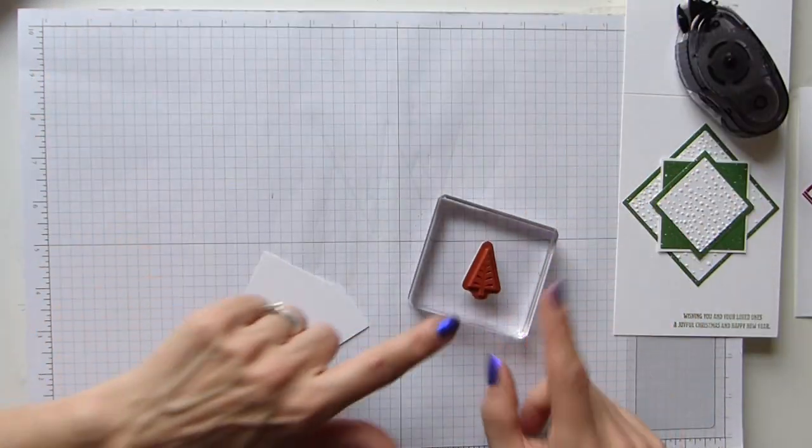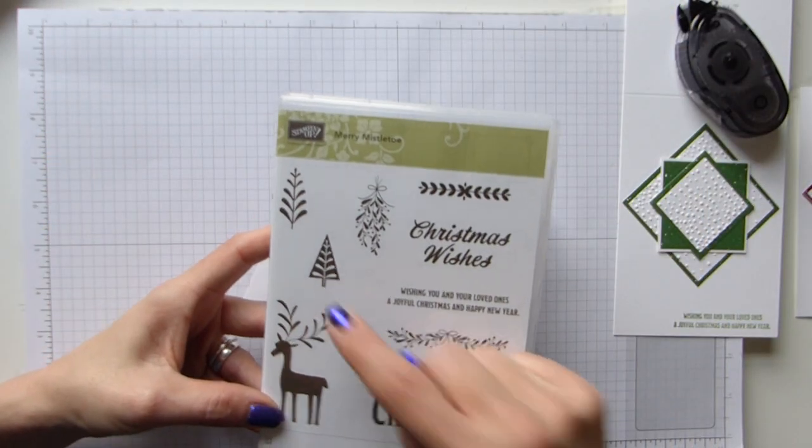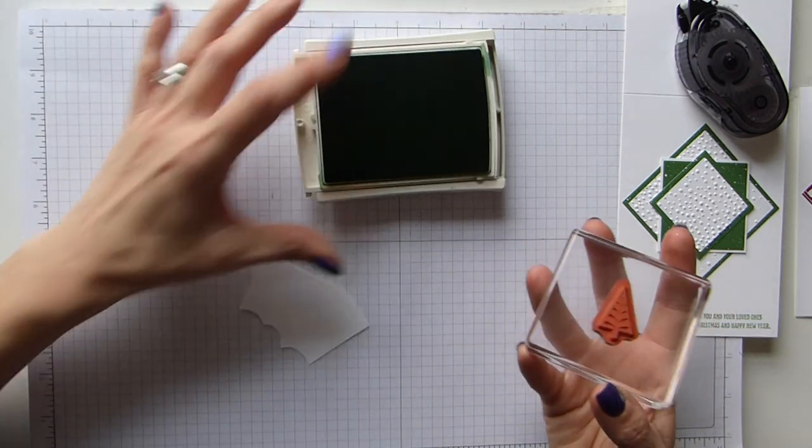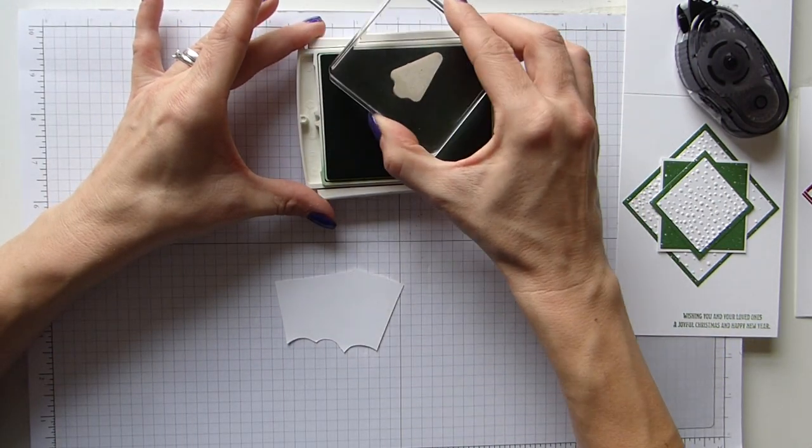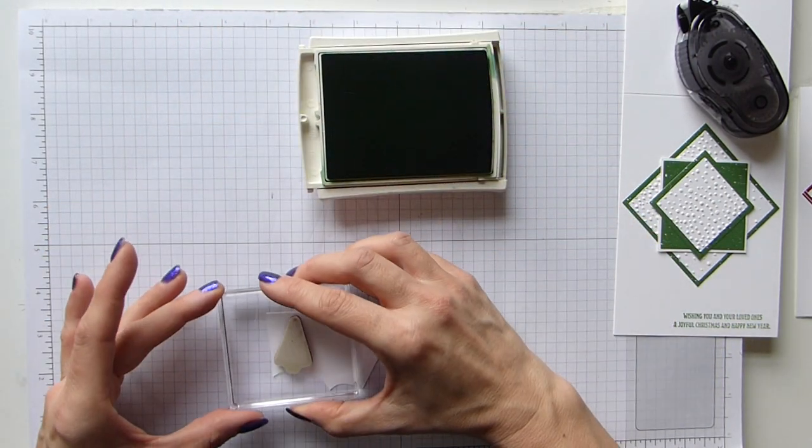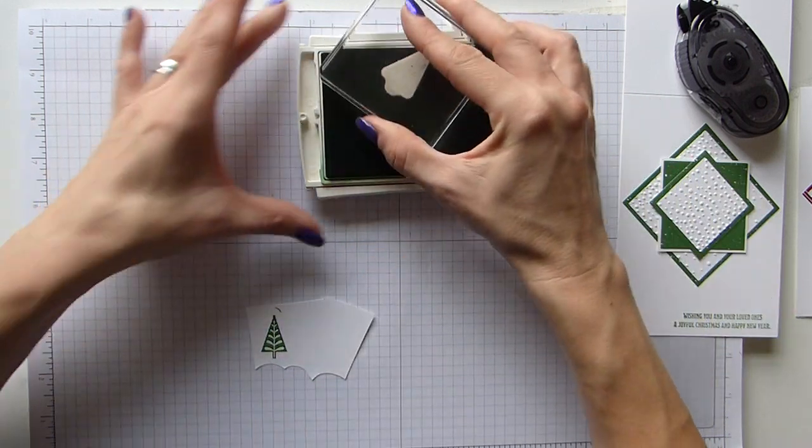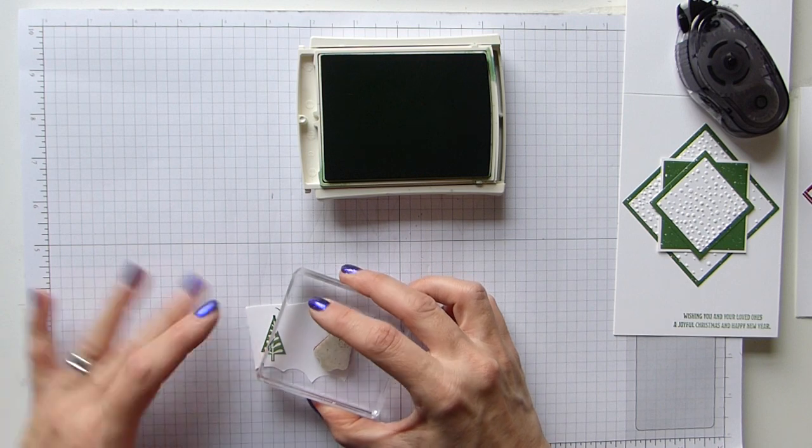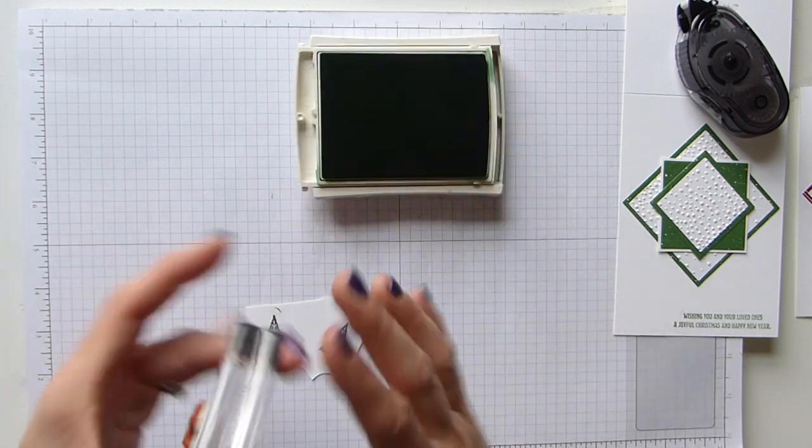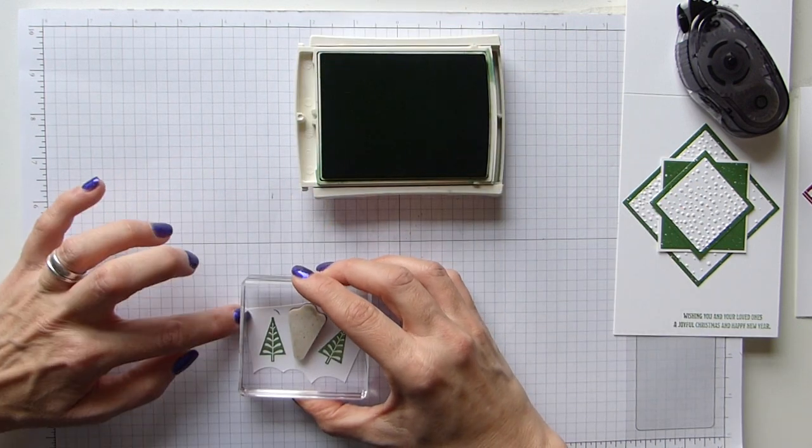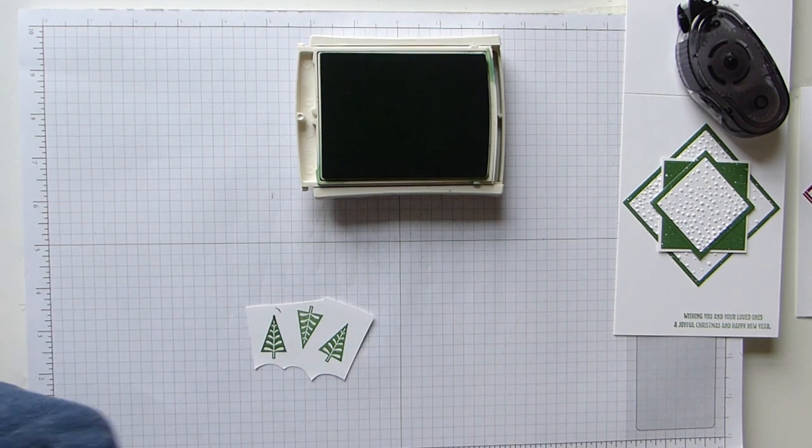Which, as I said, so I've got the small tree. I've got my Garden Green back again, and I'm just going to stamp three trees. Now that's okay because I'm going to be cutting them out, so you won't see that part. So stamped my three trees.